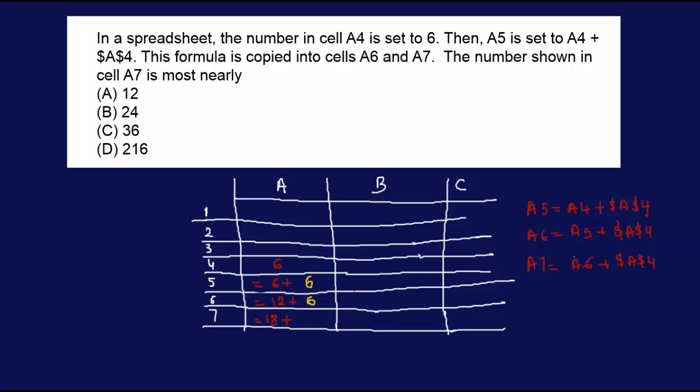Plus still your 6 remains unchanged. So A7 is therefore equal to 24. And here is your answer. Your answer is B.